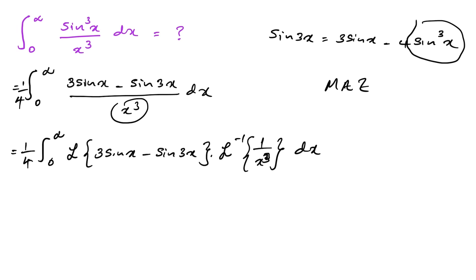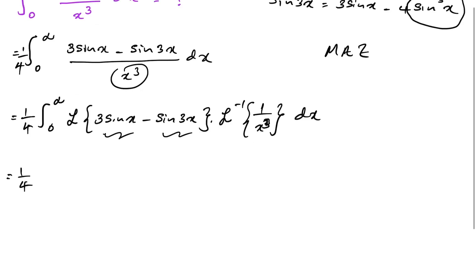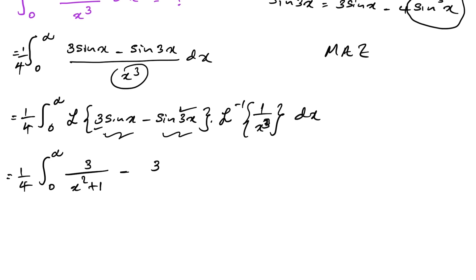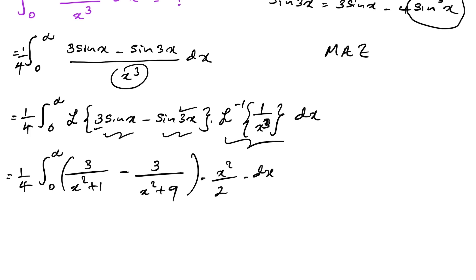So we have one-quarter times the integral from 0 to infinity of: the Laplace transform of sine x is 1 over (x squared + 1), so 3 over (x squared + 1); and the Laplace transform of sine 3x gives 3 over (x squared + 9). Then multiplied by the inverse Laplace transform of 1 over x cubed, which is x squared over 2 dx.